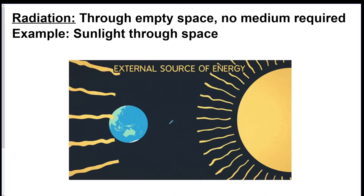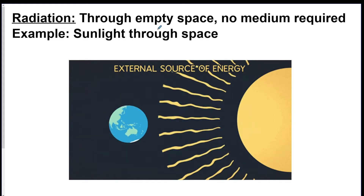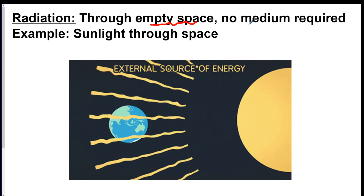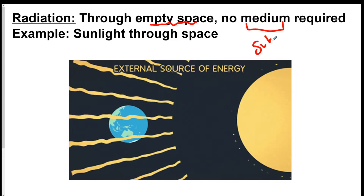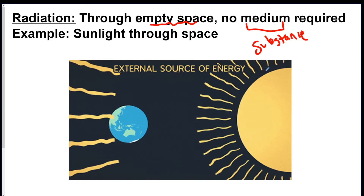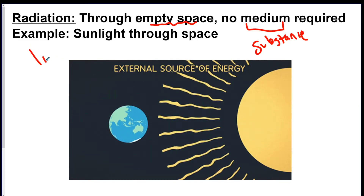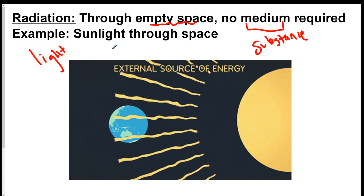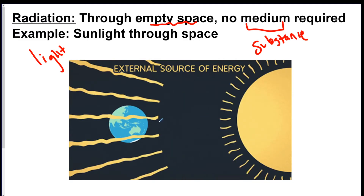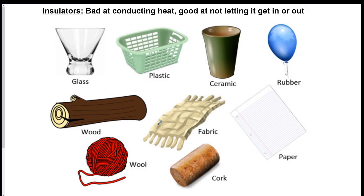The last type is radiation. The only things to know about radiation are that heat is transferred through empty space and it requires no medium — no substance to travel through. The main example is light of any sort, or anything moving through space. Sunlight traveling through space and reaching Earth is a good example of radiation.